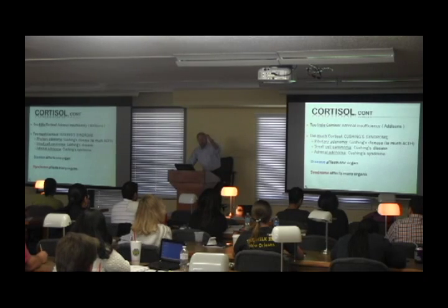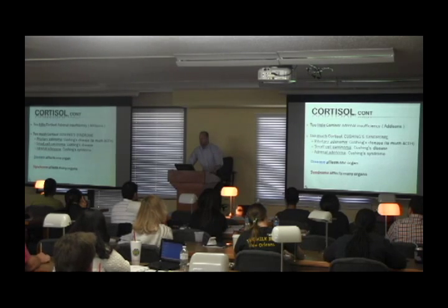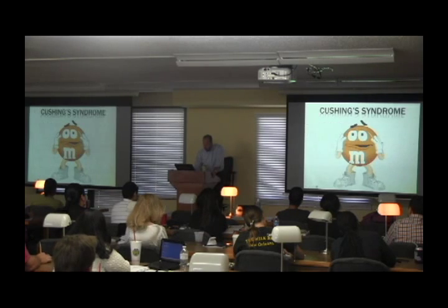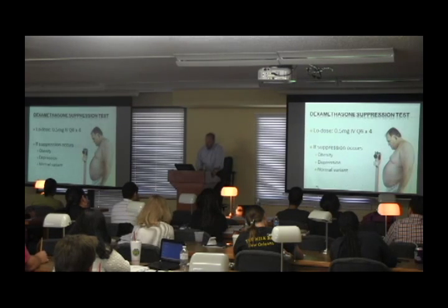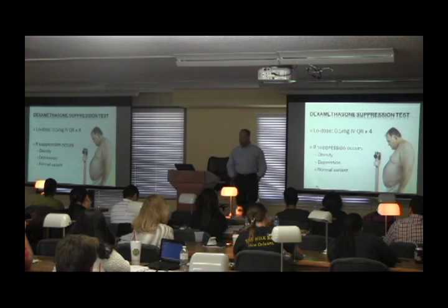Then when I subcategorize them, we subcategorize them into Cushing's Syndrome or Cushing's Disease. So I need you to understand this. Let's start with the first one. So when a patient comes in and looks like an M&M, what do you do?